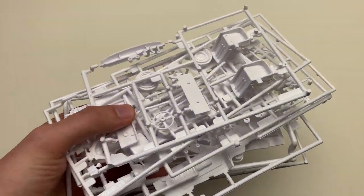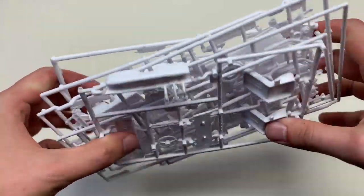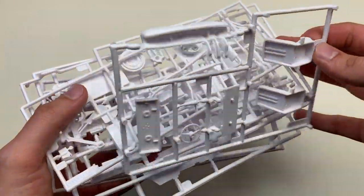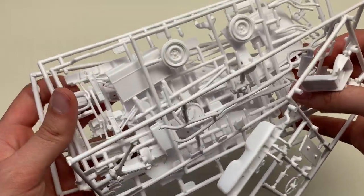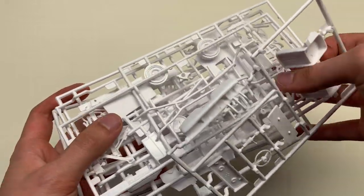As most of these Revell US kits from the muscle car era, they come with a ton of parts. It has a nicely detailed interior and also engine bay and chassis as well. So let's go through those parts carefully one by one.